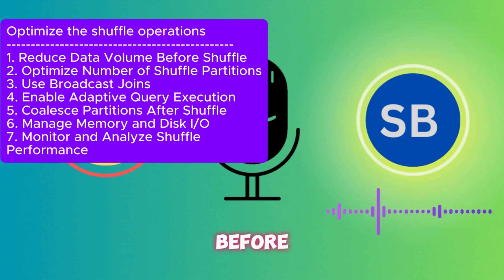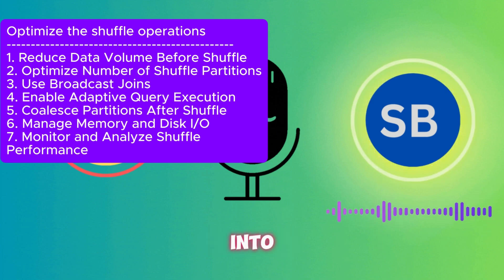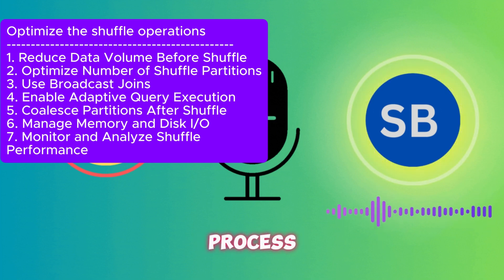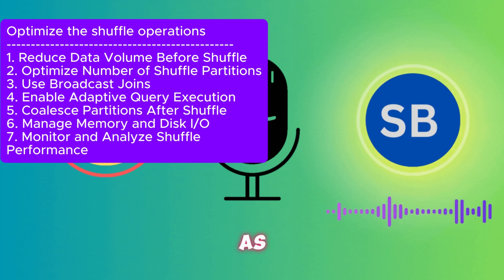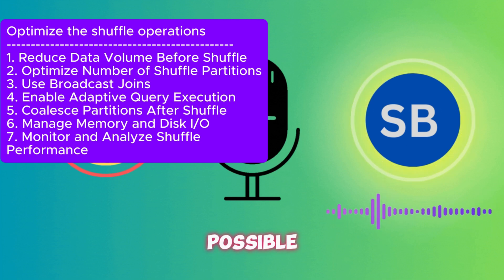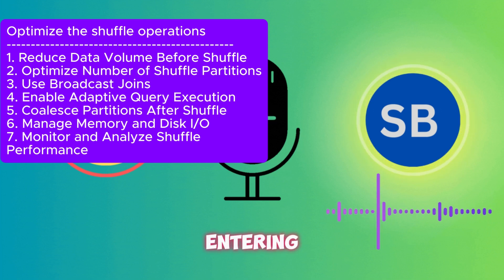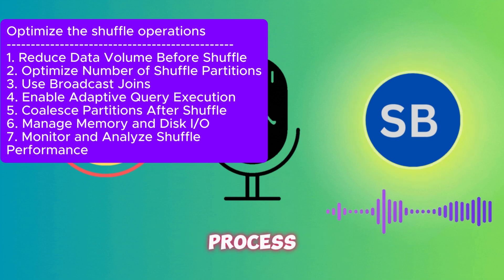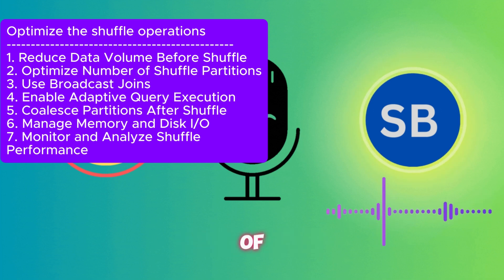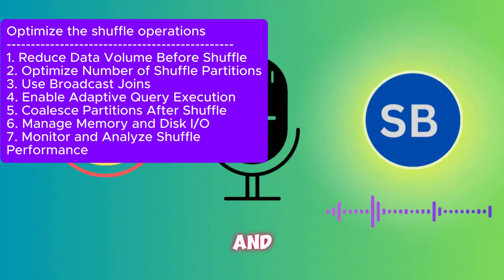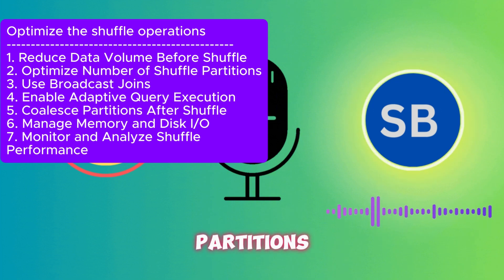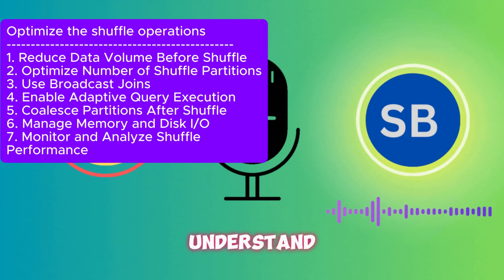We should filter out the data as much as possible to avoid sending unnecessary data into the shuffling process, because shuffling involves a lot of I/O operations. We also need to optimize the number of shuffle partitions — we need to understand how many partitions fit the use case and use the right number accordingly.